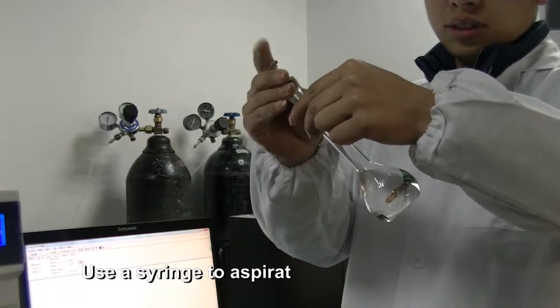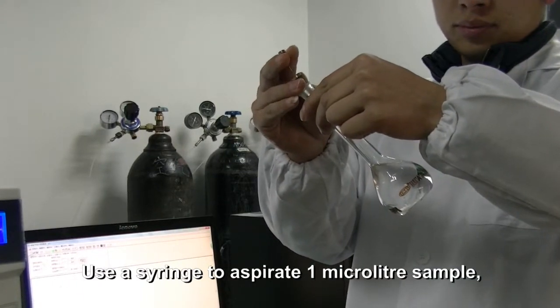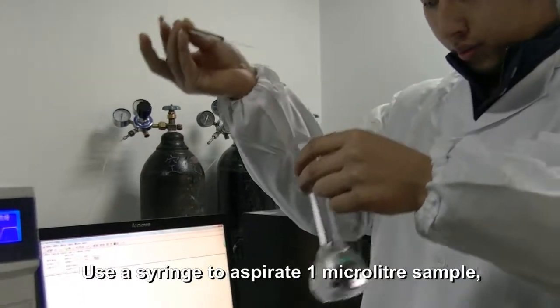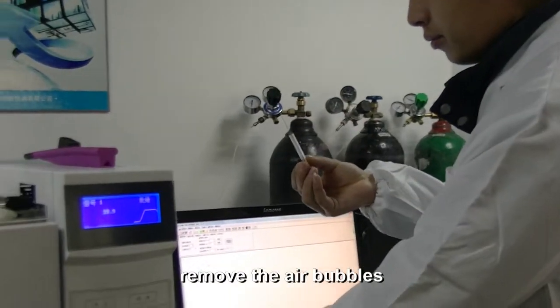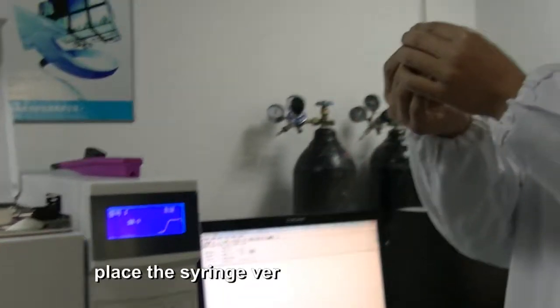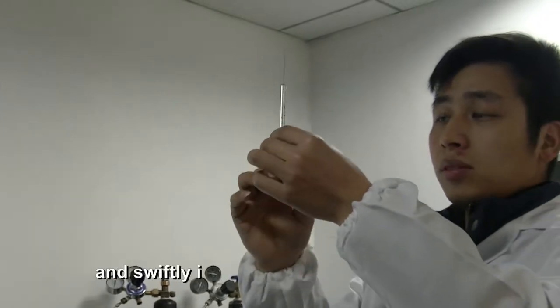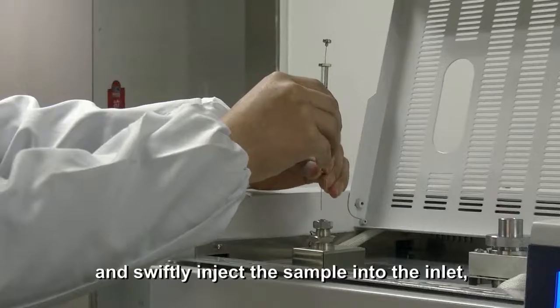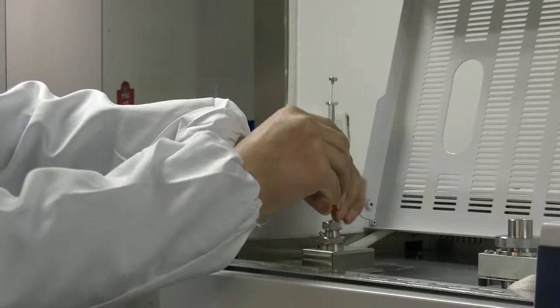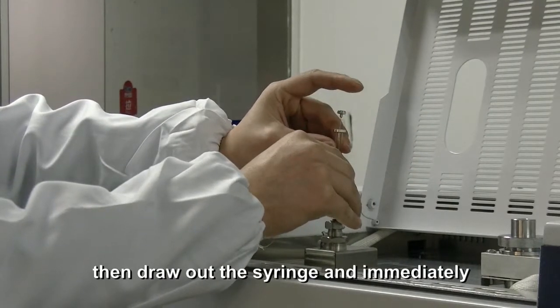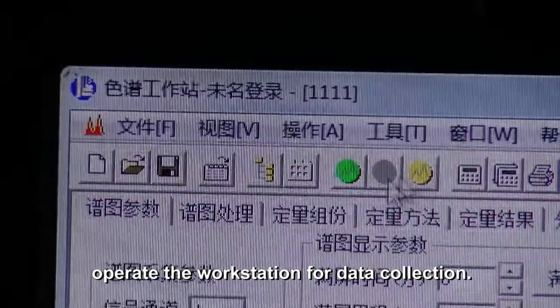Use a syringe to aspirate 1 µL sample. Remove the air bubbles, place the syringe vertically above the inlet, and swiftly inject the sample into the inlet. Then draw out the syringe and immediately operate the workstation for data collection.